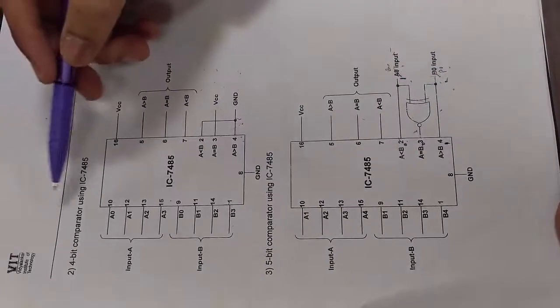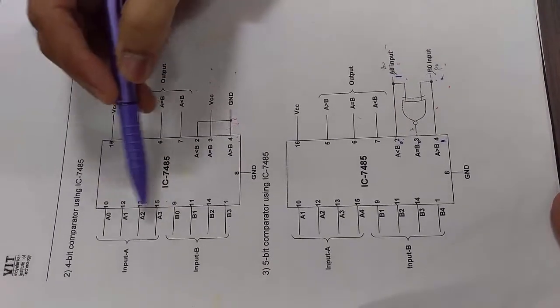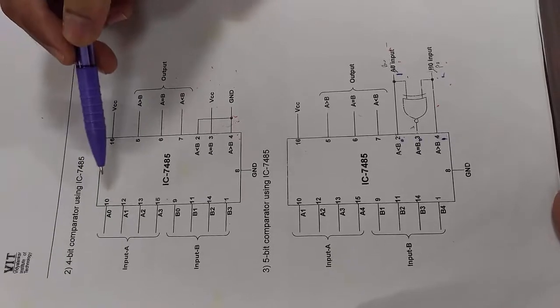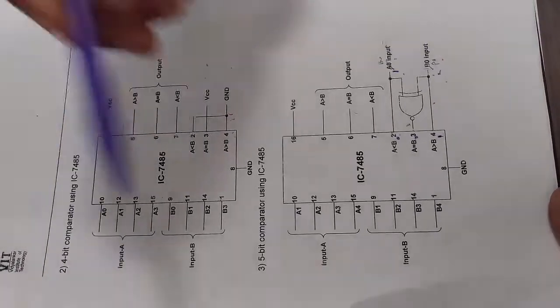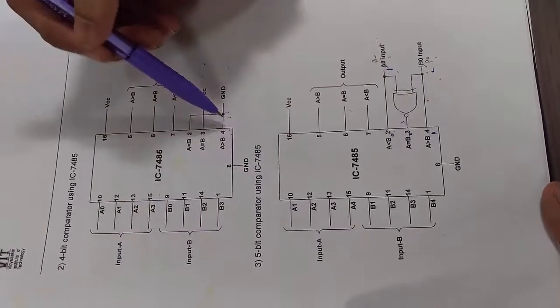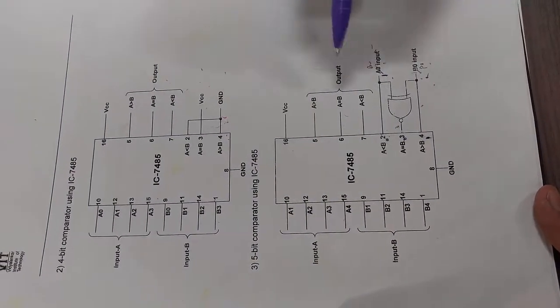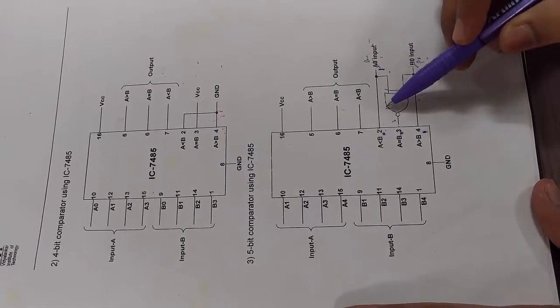So now for 4-bit comparator using IC7485, you need to connect IC7485 to the inputs and outputs as per this logical pin diagram. There is no way out. You have to learn the pin numbers and you have to make the connections accordingly. And for 5-bit comparator using IC7485, you give the 4 bits over here and the 5th bit is connected over here, that is B0 and A0, using the XNOR gate.